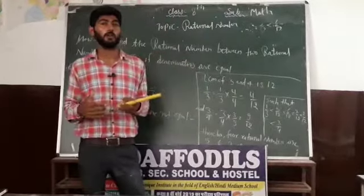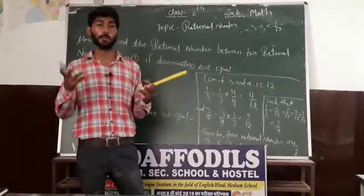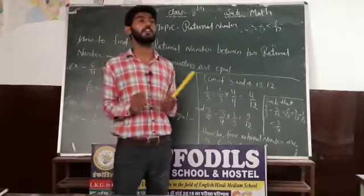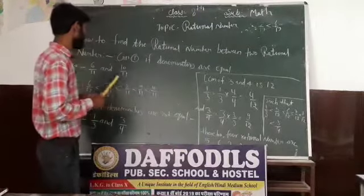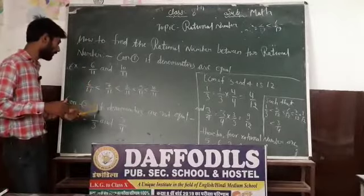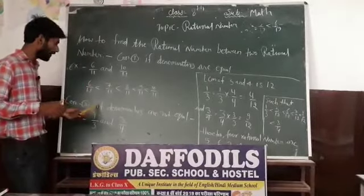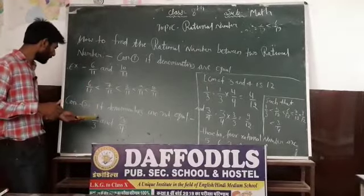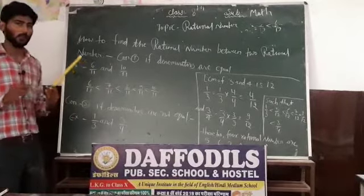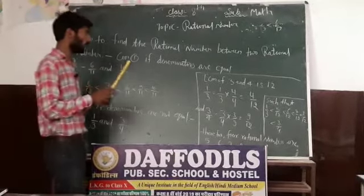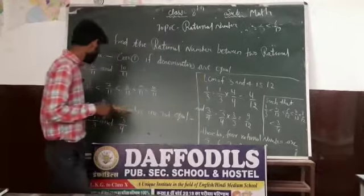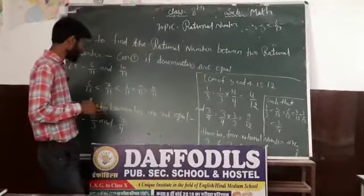Now, how to find the rational number between two given rational numbers when the denominators are not equal. Let's take an example and have a look. We have 1/3 and 3/4. These are two rational numbers. Now let's find the rational number between these two rational numbers.